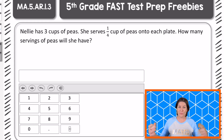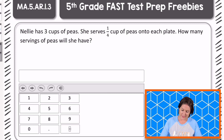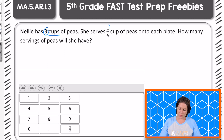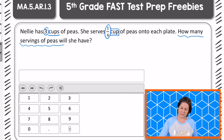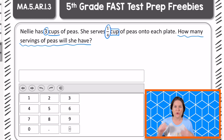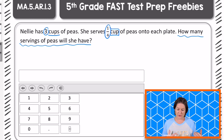All right, fifth grade, welcome back. Let's see what this problem says. It says that Nellie has three cups of peas. She serves one fourth cup of peas onto each plate. How many servings of peas will she have? I like to squiggle whatever it is that I'm trying to figure out — so, how many servings of peas will she have?